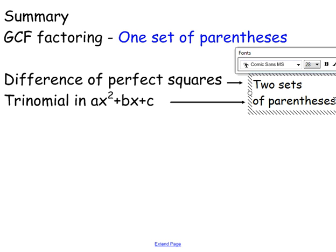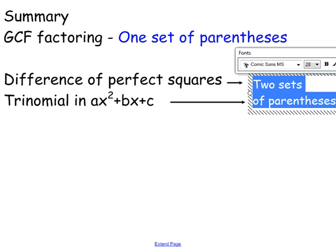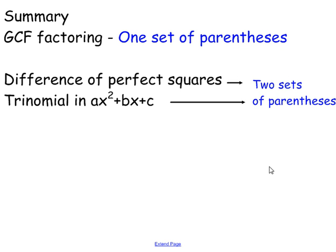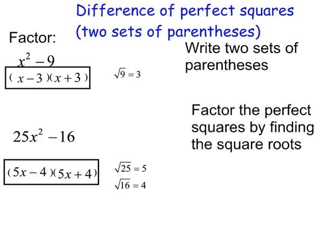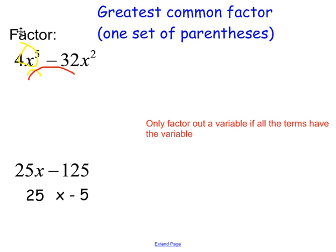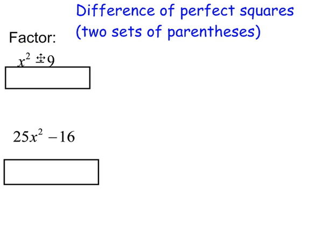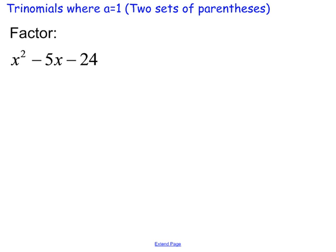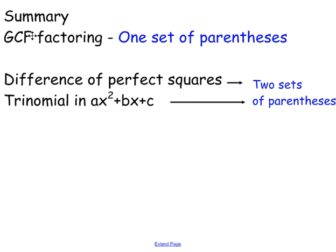It's very important to know the difference. If you see a GCF problem, you know it's going to be one set of parentheses. If you see a difference of perfect squares or a trinomial, you know you need two sets of parentheses. Very important to know the difference. I hope this video helps. Take care.